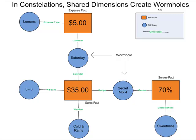So here we see my lemonade stand. I have an expense fact. Let's start in the middle—right here. So I had thirty-five dollars on Saturday, but then it also turns out that I had an expense of five dollars for lemons on Saturday. So Saturday here becomes, in my constellation, a wormhole, allowing me to jump from one fact to another.